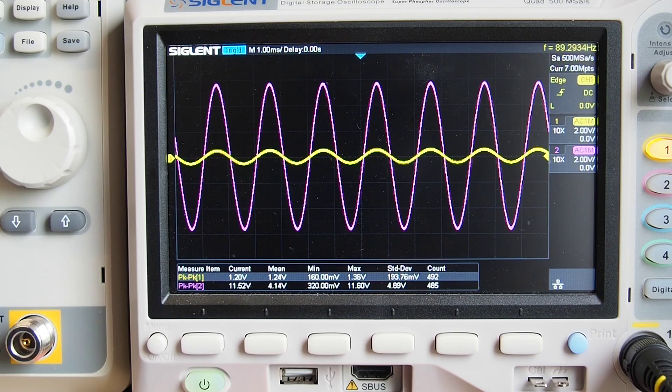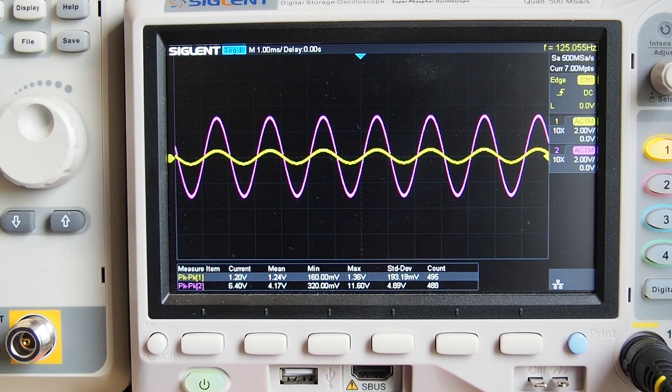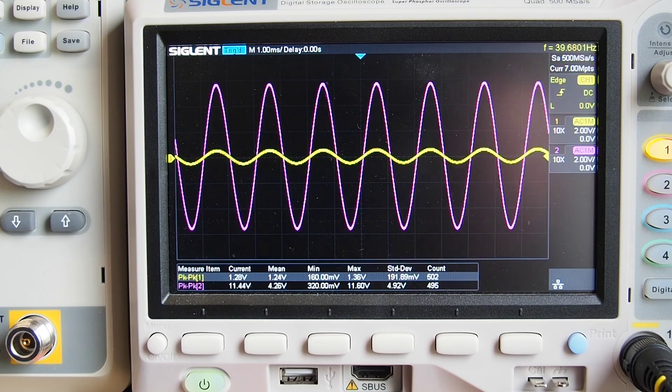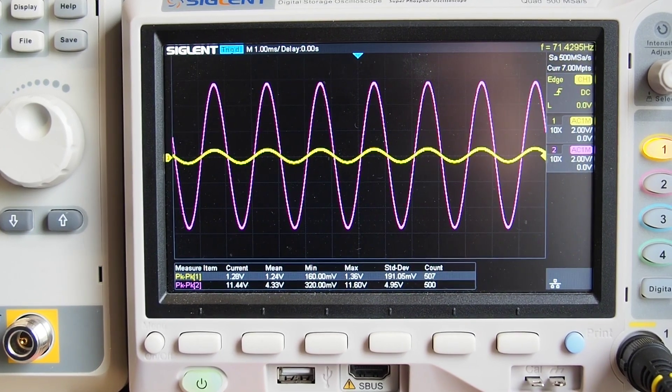You can see quite dramatic effect the gain makes, no difference to the phase but does make quite a difference to the gain. So that is the non-inverting amplifier and the effect of the feedback resistor.